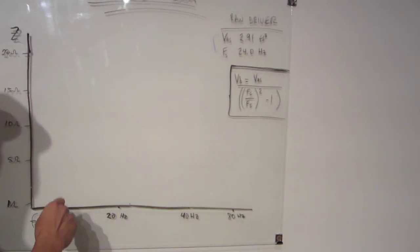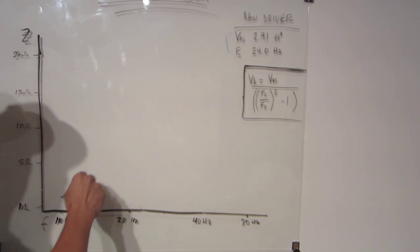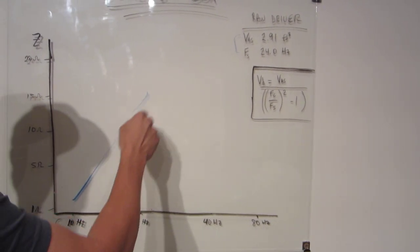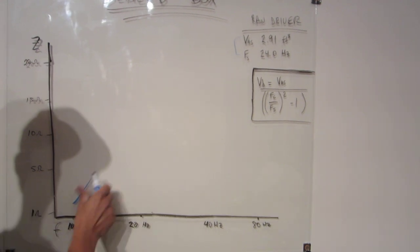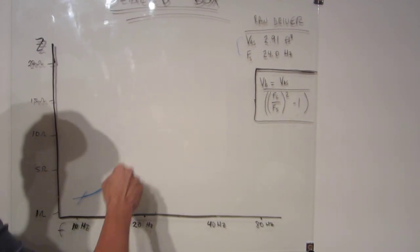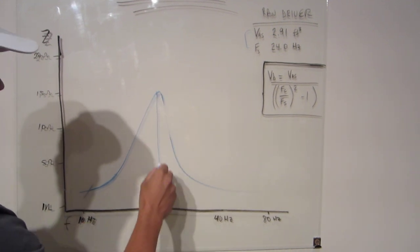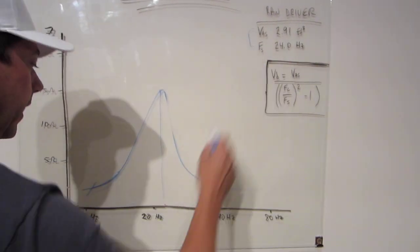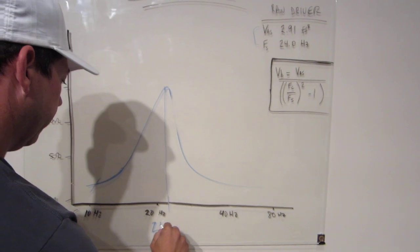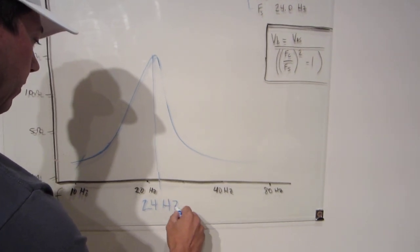So, the impedance curve for the speaker looks like this. Maybe not like that. Maybe like this. And this point right here is our FS, which was 24 Hz.